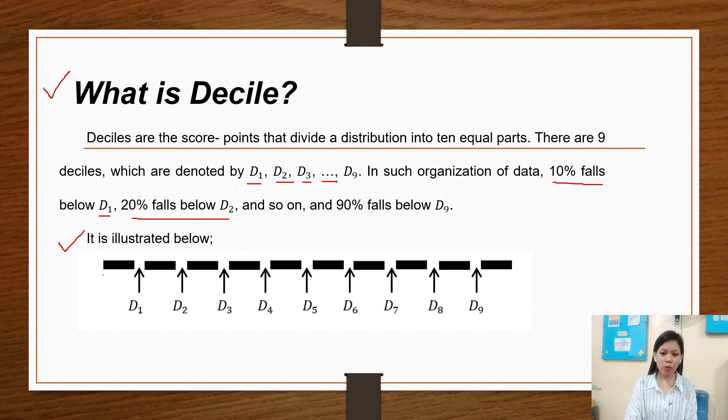So D1 is 10%, D1 to D2 is 10%, D2 to D3 is 10%, D3 to D4 is 10%, D4 to D5 is 10%, D5 to D6 is 10%, D6 to D7 is 10%.